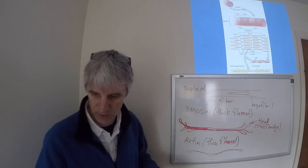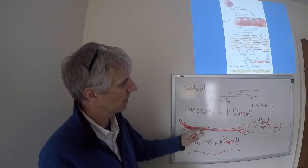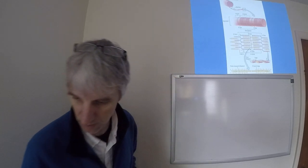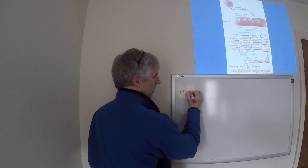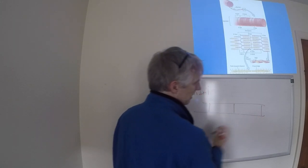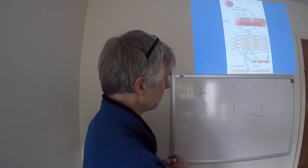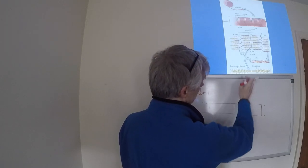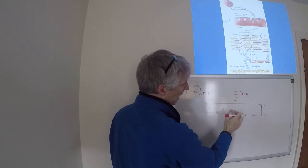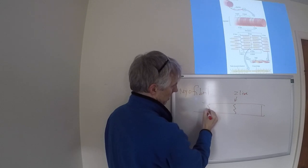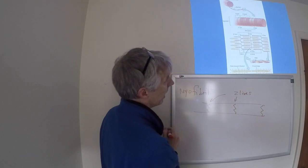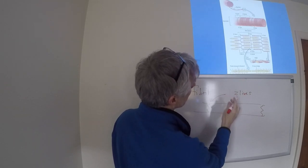Right now we have these two filaments: thick filaments and thin filaments, organized in a very specific way within the myofibrils. If we take this myofibril, we can break it down into discrete chunks based on visual anatomy. We have these lines here called Z lines. And in between Z lines, we have another line called the M line.